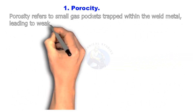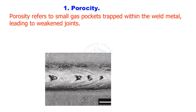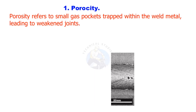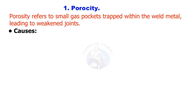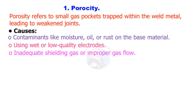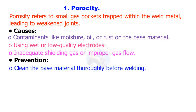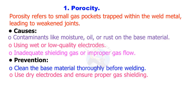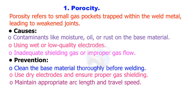Porosity refers to small gas pockets trapped within the weld metal, leading to weakened joints. Causes include contaminants like moisture, oil, or rust on the base material; using wet or low-quality electrodes; and inadequate shielding gas or improper gas flow. Prevention: clean the base material thoroughly before welding, use dry electrodes and ensure proper gas shielding, and maintain appropriate arc length and travel speed.